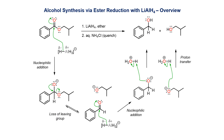The hydrides in LAH are strongly nucleophilic because of the large electronegativity difference between aluminium and hydrogen. Hydride attacks the electrophilic carbon of the ester, forming a tetrahedral intermediate, which then collapses with loss of a leaving group to give an aldehyde and an alkoxide.